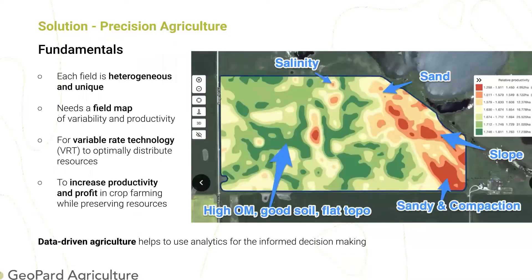Fundamentals of precision agriculture — I'm pretty sure that all of you are aware that there are spots on the field with high-yield productivity and low-yield productivity. Geopard helps implement precision ag practices and variable rate technology on fields at scale, which in the end helps you increase your ROI and usage of data-driven agriculture.